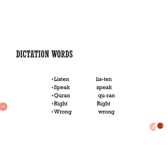Now we will learn dictation words. Listen, speak, Quran, write, wrong. These are our dictation words. The easy way to remember spellings is to break them into syllables.